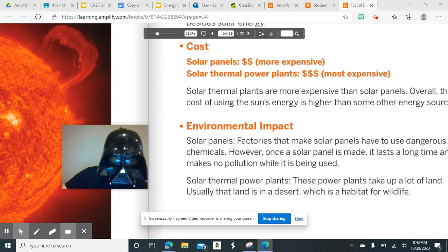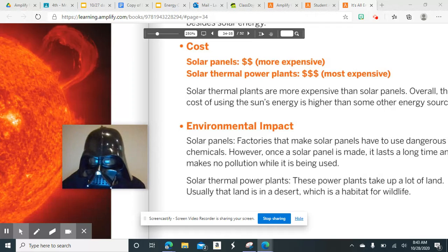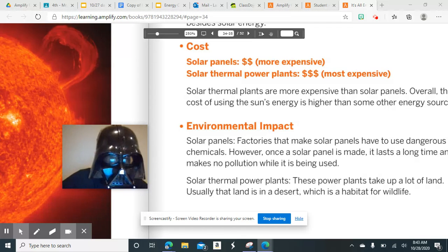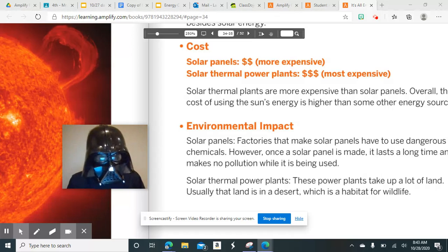The solar thermal power plants, which are the most expensive option in terms of the power using the sun, these power plants take up a lot of land, and usually that land is in the desert, which is a habitat for wildlife. So it might affect some of the animals that are living in the desert in that habitat because they take up a large space. But overall, in terms of the environmental impacts that sometimes can happen, it's not that bad.